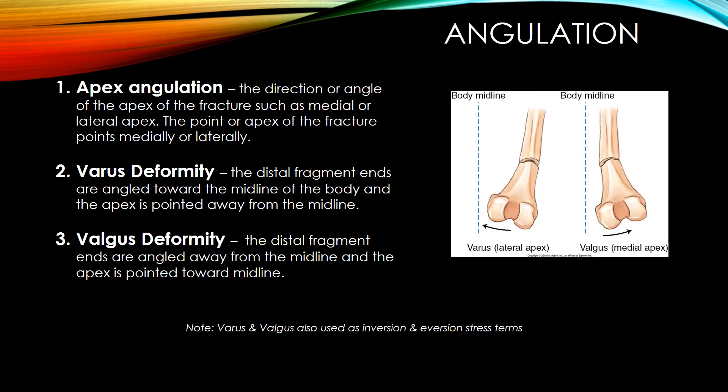Angulation: apex angulation refers to the direction or angle of the apex of the fracture, such as medial or lateral apex, where the point or apex points medially or laterally. Varus deformity: the distal fragment ends are angled towards the midline of the body and the apex is pointed away from the midline. Varus and valgus are also used as inversion/eversion in stress terms.